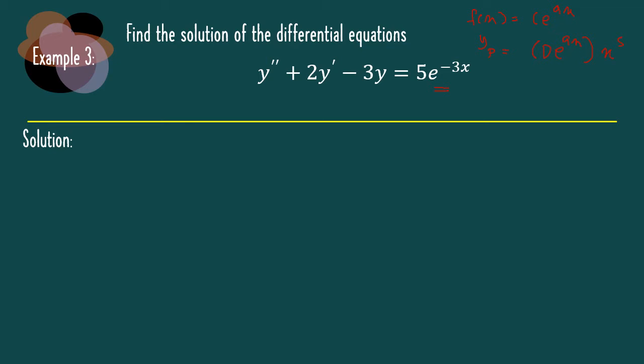Let's start our calculation. Firstly, we are going to find our yh. Since everybody already knows how to find yh, I will just directly write it. I have lambda 1 equal to 1 and lambda 2 equal to minus 3. So our general solution yh is equal to a exponent x plus b exponent minus 3x.